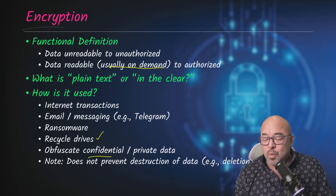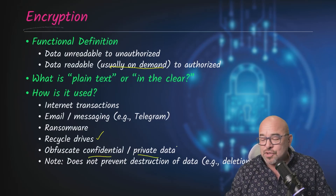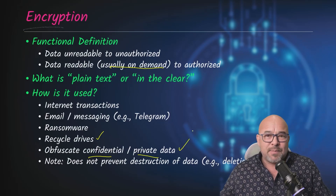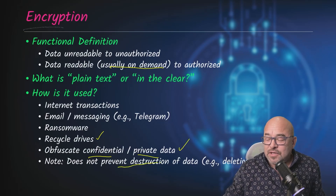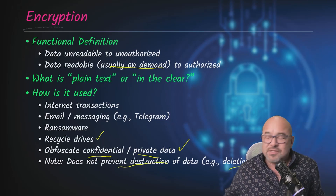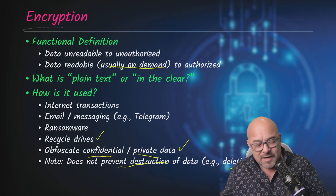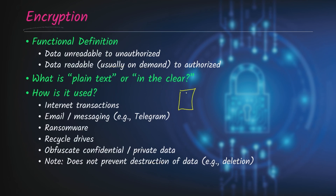The main purpose of encryption is to obfuscate confidential or private data — keep it from prying eyes. But be aware that it does not prevent the destruction of data, such as the deletion of data. If someone sees a file in a file share that's encrypted but they don't have the decryption keys, they may not be able to open it, but they could still go ahead and delete it. So that could still be possible.